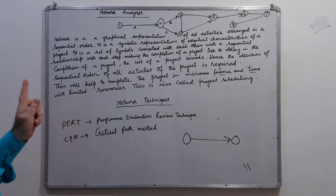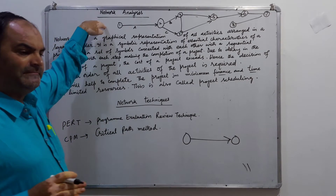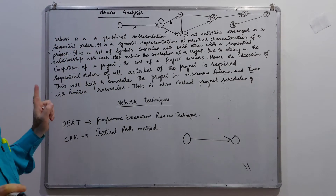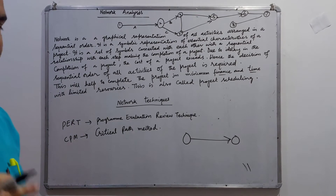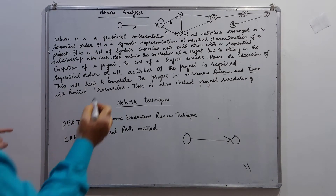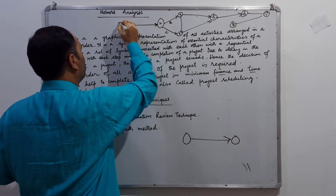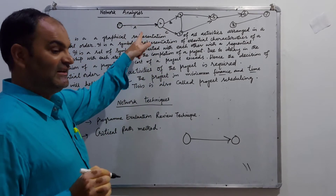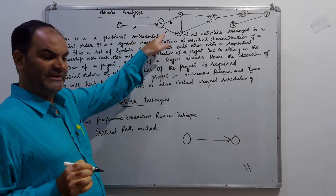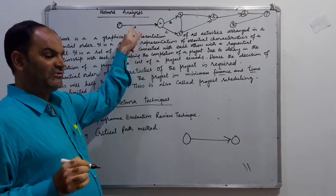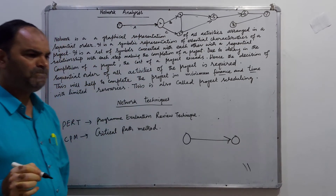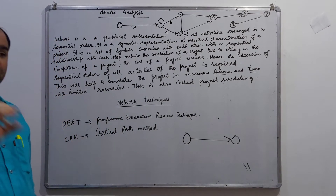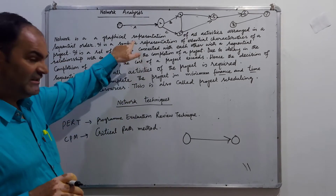A network diagram is a graphical representation of logically and sequentially connected arrows and nodes. Arrows and nodes are connected with each other, and this diagrammatic representation is what we call a network diagram. Key components include predecessor activities, successor activities, and dummy arrows. These are the main elements of the network diagram we discuss.